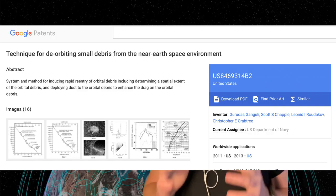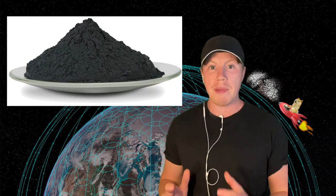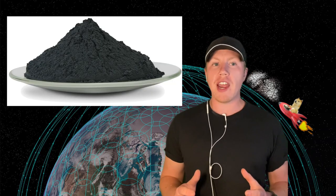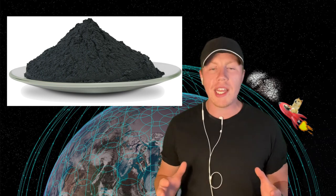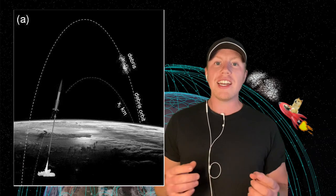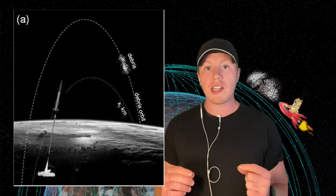So enter this Navy patent from 2011. Basically, in 2011, the Navy patented this super cool concept of using tungsten powder. So they would load up the fairing of a rocket with 20 tons of finely grained tungsten powder. And for reference, this would easily fit inside a Falcon 9.